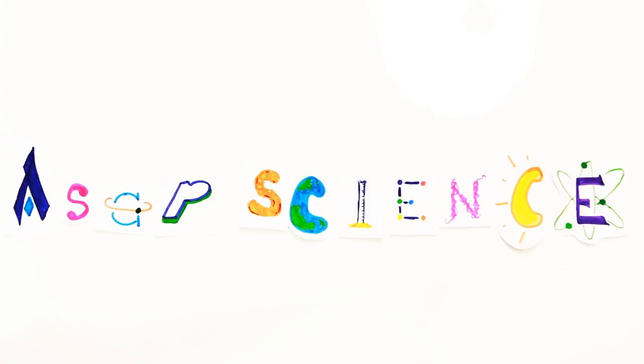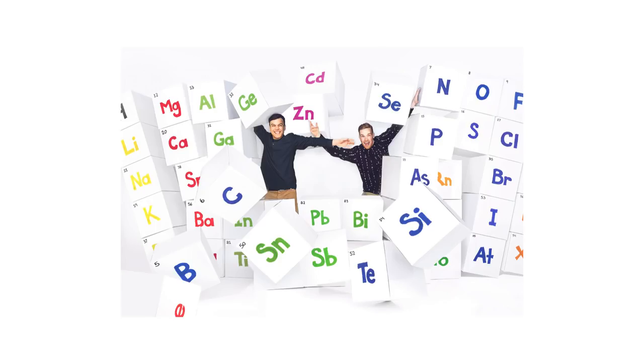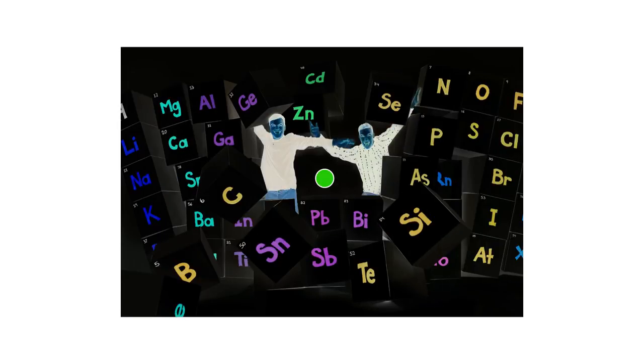Humans can discern between 2.3 million colors, but try staring at this picture of us bursting through the periodic table and focus on the green dot as we invert the colors. Don't stop staring there until I say.